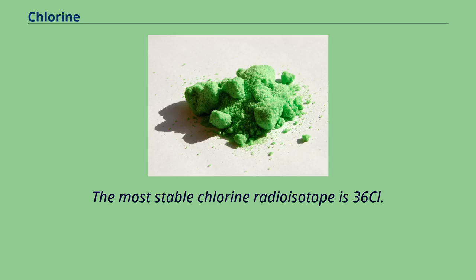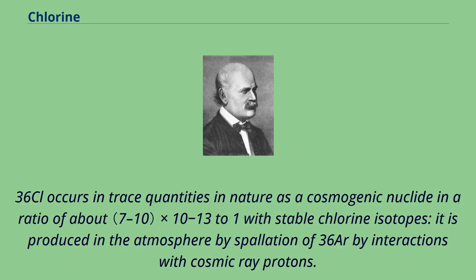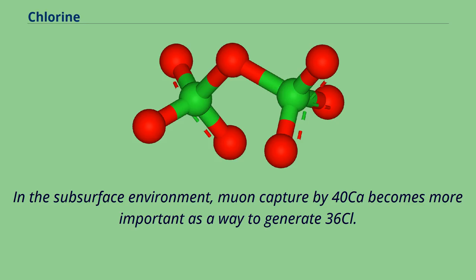The most stable chlorine radioisotope is ³⁶Cl. The primary decay mode of isotopes lighter than ³⁵Cl is electron capture to isotopes of sulfur; that of isotopes heavier than ³⁷Cl is beta decay to isotopes of argon, and ³⁶Cl may decay by either mode to stable ³⁶S or ³⁶Ar. ³⁶Cl occurs in trace quantities in nature as a cosmogenic nuclide in a ratio of about 10⁻¹³ to 1 with stable chlorine isotopes. It is produced in the atmosphere by spallation of ³⁶Ar by interactions with cosmic ray protons. In the top meter of the lithosphere, ³⁶Cl is generated primarily by thermal neutron activation of ³⁵Cl and spallation of ³⁹K and ⁴⁰K.